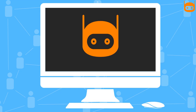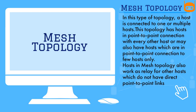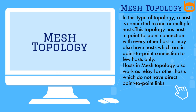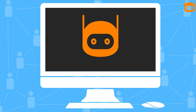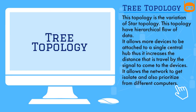In mesh topology, a host is connected to one or multiple hosts. This topology has hosts in point-to-point connection with every other host, or may have hosts connected point-to-point with only a few hosts. Hosts in mesh topology also work as relays for other hosts that do not have direct point-to-point links.